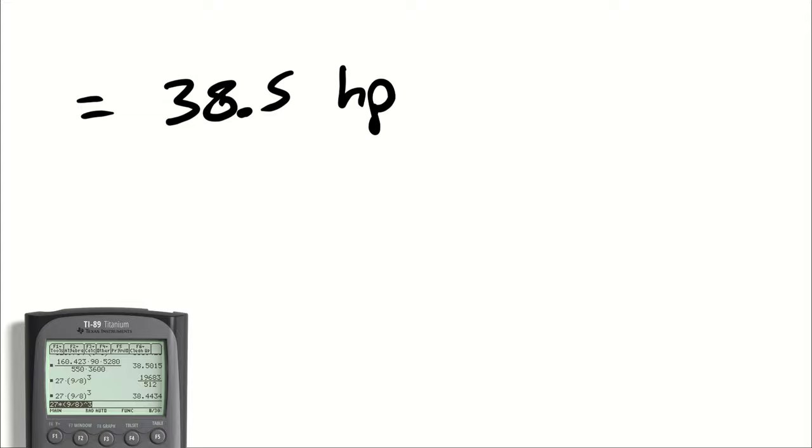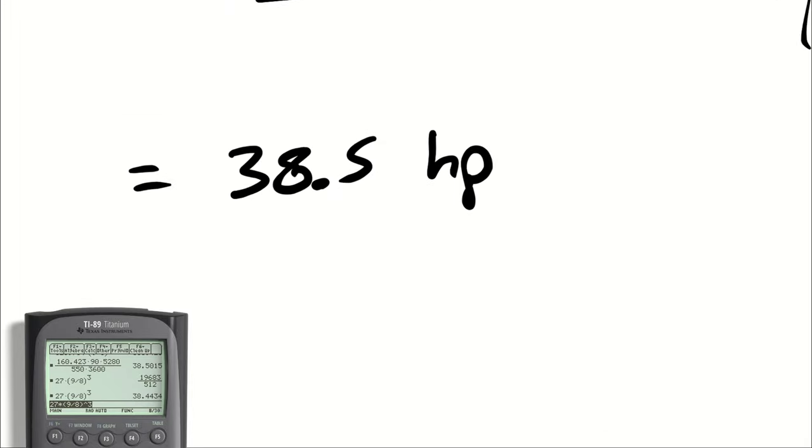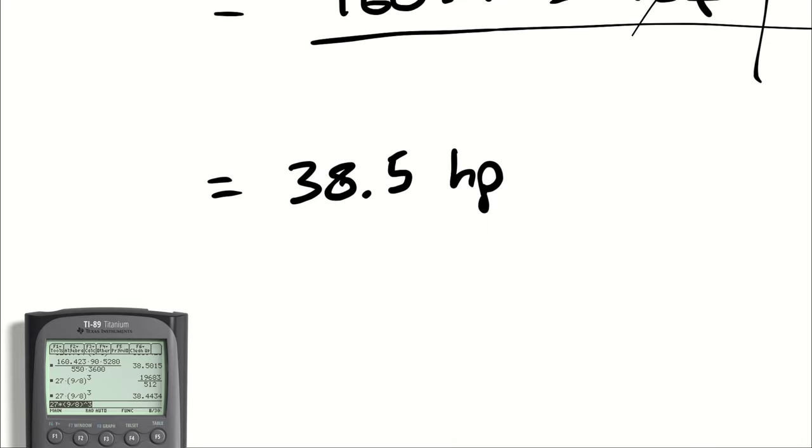So going 90 miles an hour down I-29, hypothetically, of course, on a still day with no other losses of any kind is going to require a power input of 38.5 horsepower from the engine.